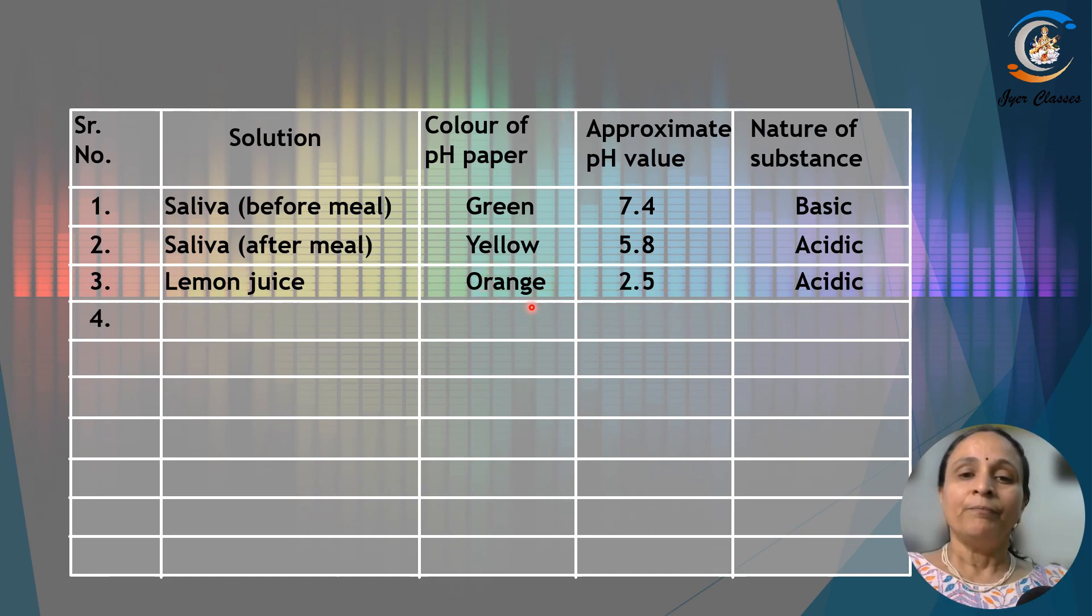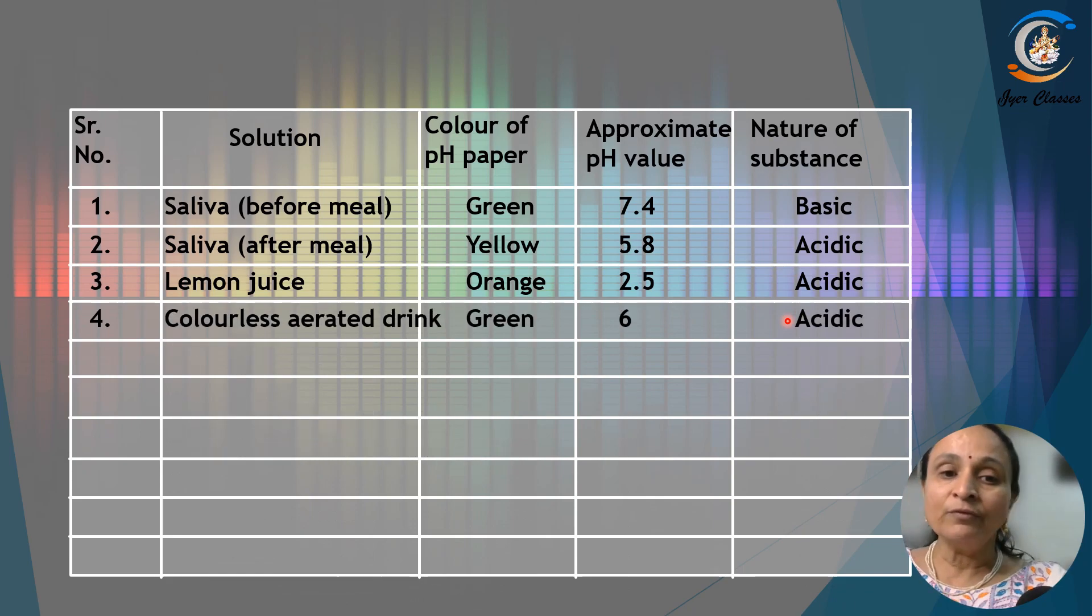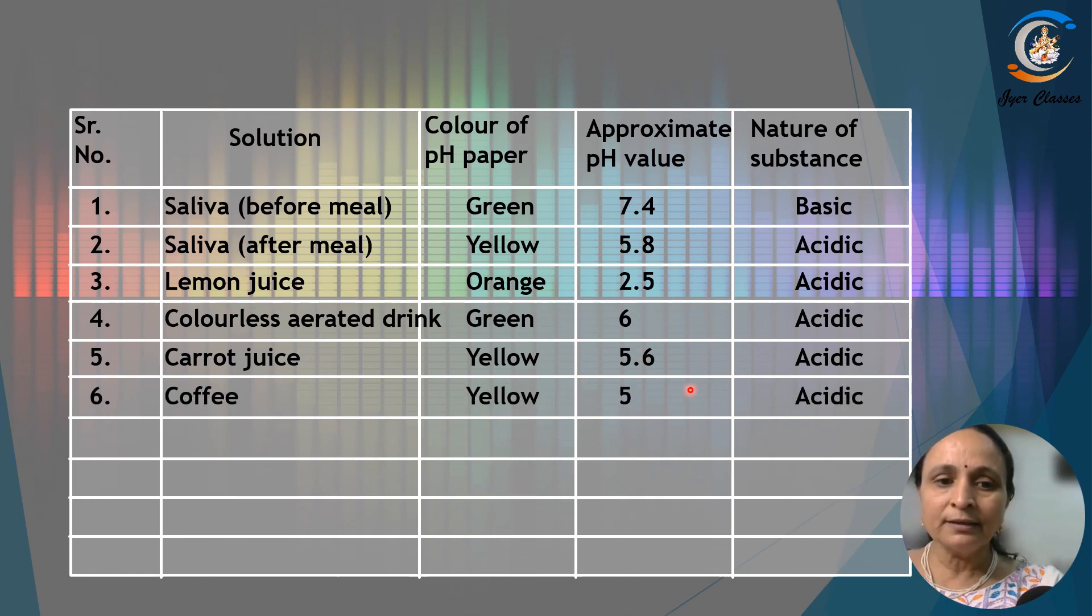Lemon juice pH is 6, so it is acidic. Then you get carrot juice 5.6, it is more acidic. Coffee it turns yellow, so it is 5, acidic. Tomato juice 4.1, more acidic. Tap water green, 6.9.